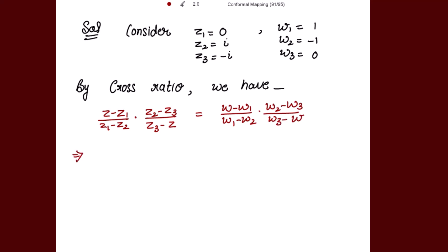Now we put all these points into the formula. We get (z - 0)/(0 - i) · (i - (-i))/((-i) - z) = (w - 1)/(1 - (-1)) · (-1 - 0)/(0 - w), where (i - (-i)) = 2i and (1 - (-1)) = 2.